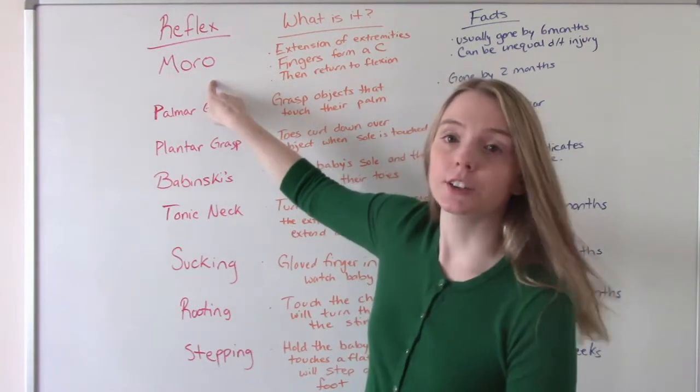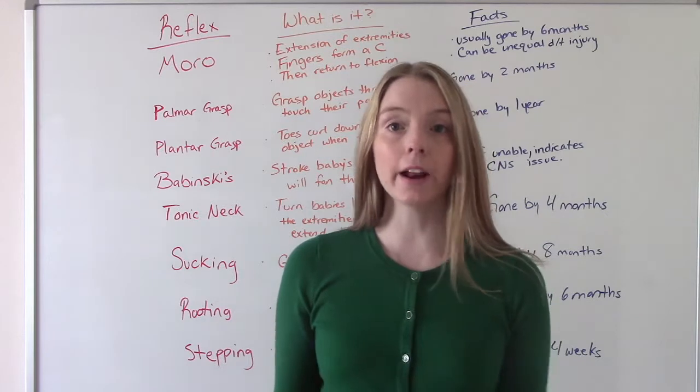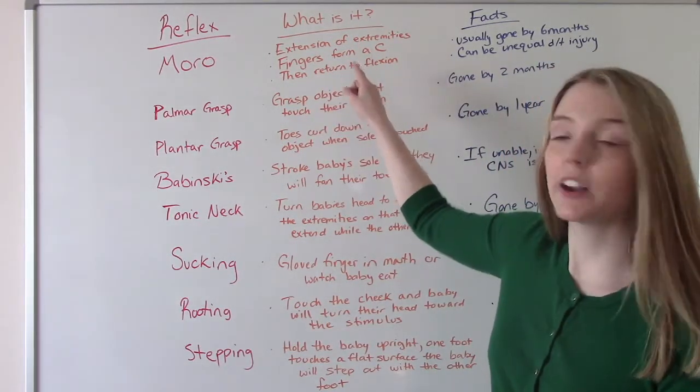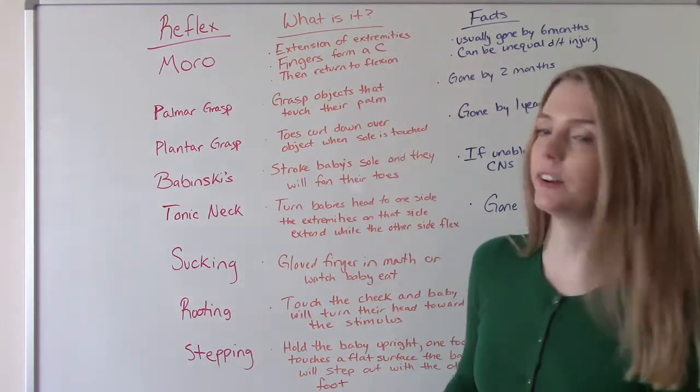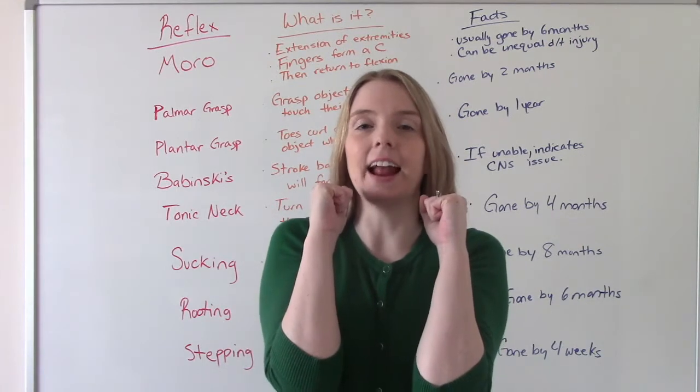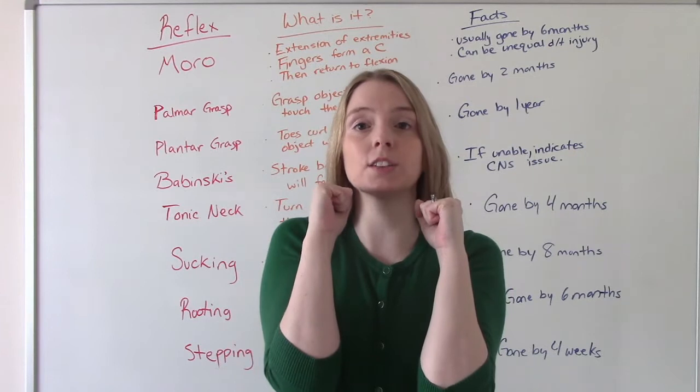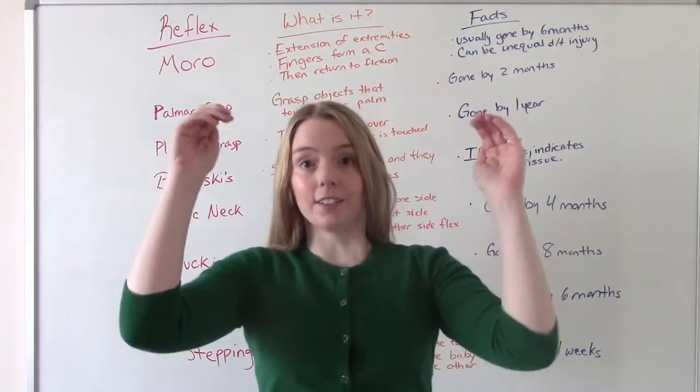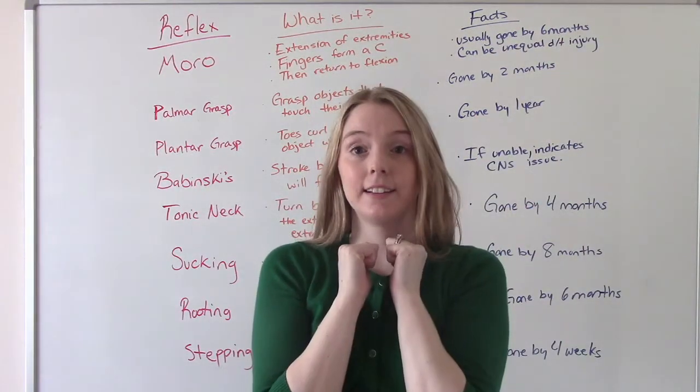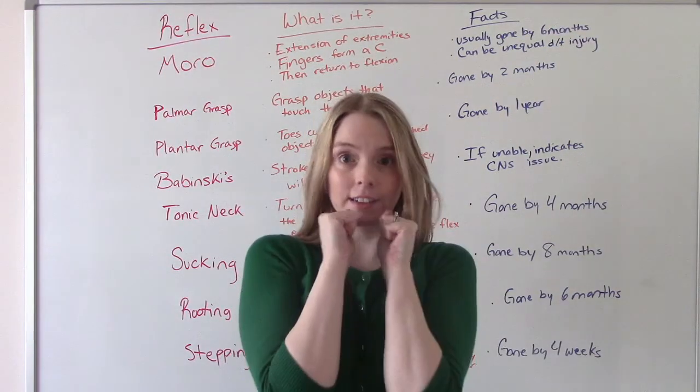Our first reflex is the Moro reflex, sometimes called the startle reflex. What happens is baby extends their extremities, forms a C with their fingers, and then goes back to flexion. So babies are cozy in their bassinet, and maybe somebody bumps the bassinet or there's a loud noise, something startles them. They go like this, and their fingers form a C, and then they come back. That's the Moro reflex—they're temporarily startled, and then they come back.